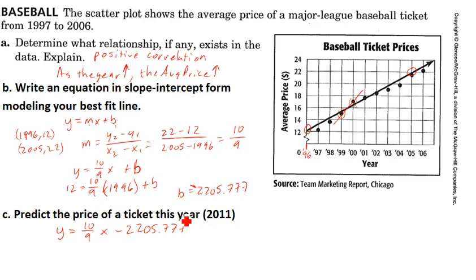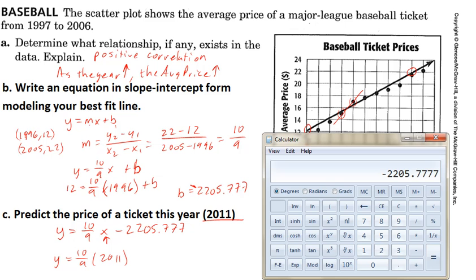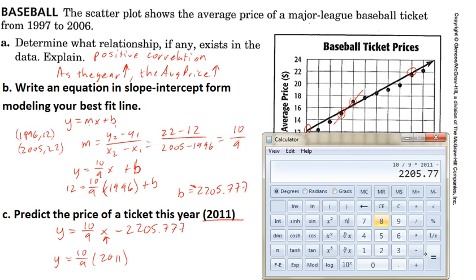Now I want to predict the price of a ticket in 2011. So we'll put 2011 in for x: y equals (10/9) times 2011 minus 2205.777. I'll type that in — (10/9) times 2011 minus 2205.77 — and I get the predicted price.